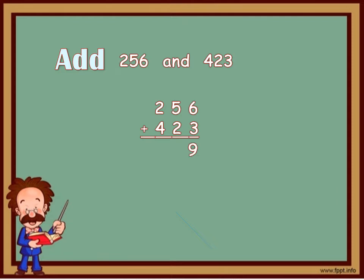Add them, you will get 679. You have to write the answer in the end. So, your answer is equal to 679.